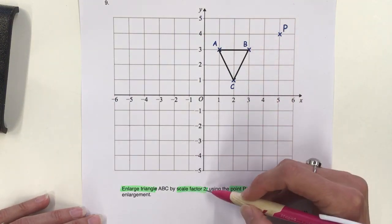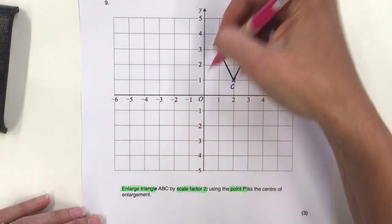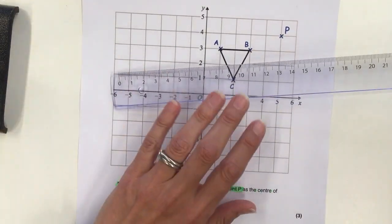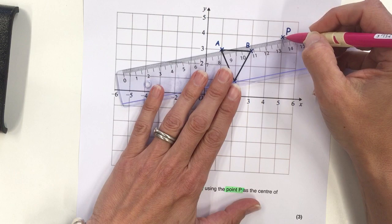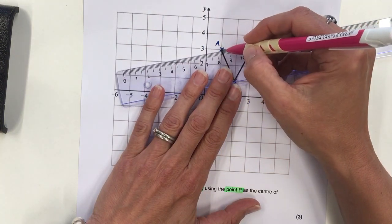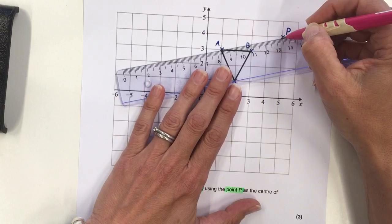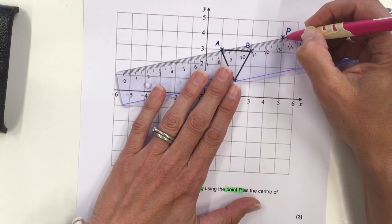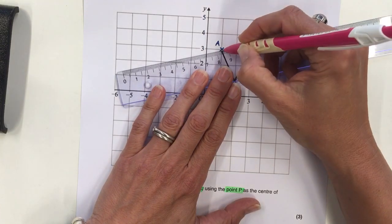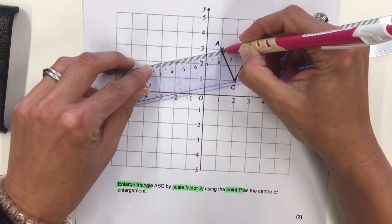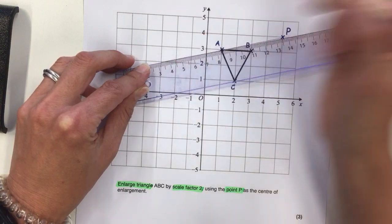Because it's scale factor 2, our shape should be twice as big. To ensure that, we take point P and choose a vertex, one of the corners, and draw a line between point P and the vertex, then extend that line so it's twice as long.